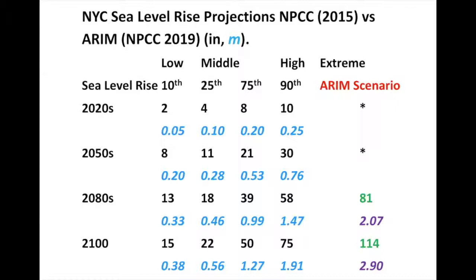We call this extreme case the very high upper bound, very low probability scenario: ARIM — the Antarctic Rapid Ice Melt scenario. It's based on studies suggesting there may be destabilizing processes most likely to hit the West Antarctic ice sheet late in the century under high emission scenarios — think RCP 8.5, close to a business-as-usual scenario if nothing is done to curb carbon emissions.